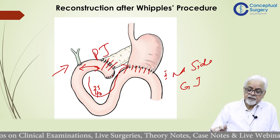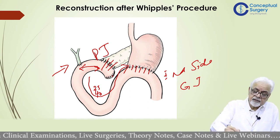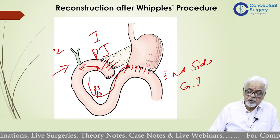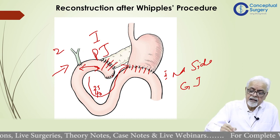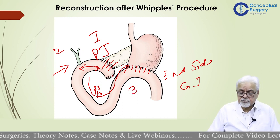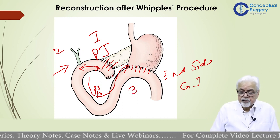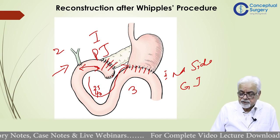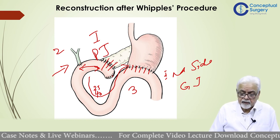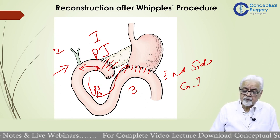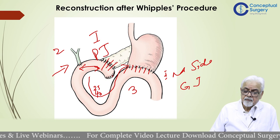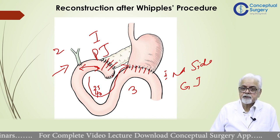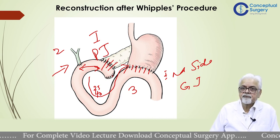So this is the kind of reconstruction: first is pancreaticojejunostomy, second is choledochojejunostomy, and third is gastrojejunostomy. There could be various modifications, but this is the most common way that this operation is performed.